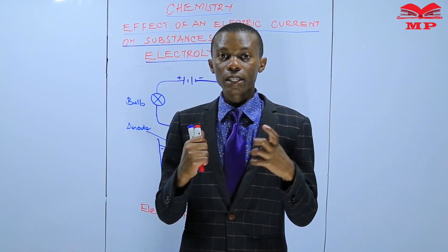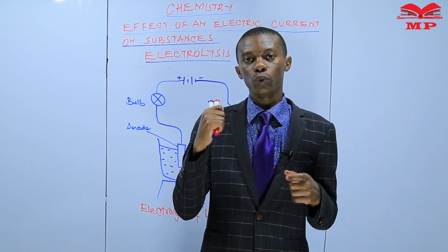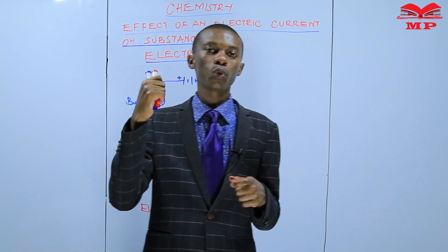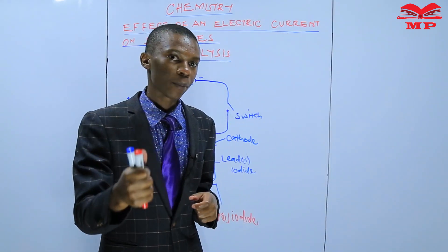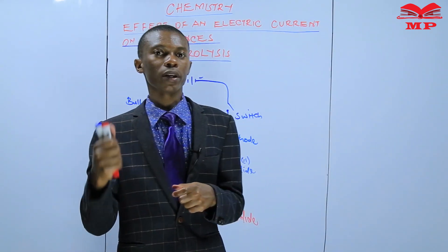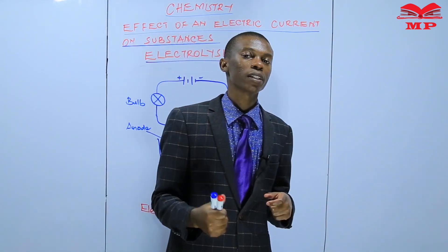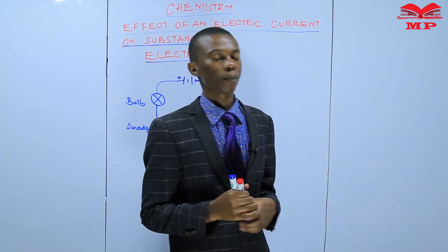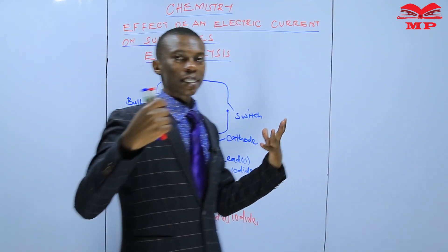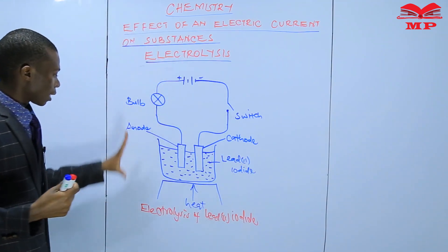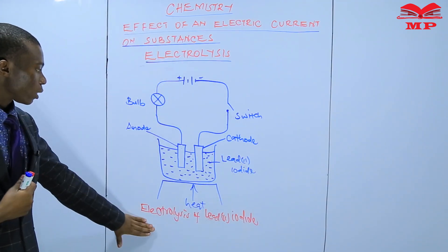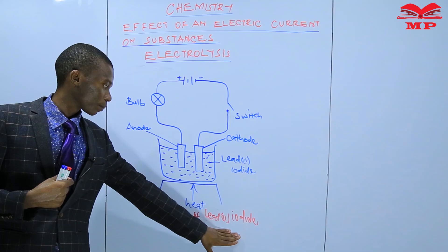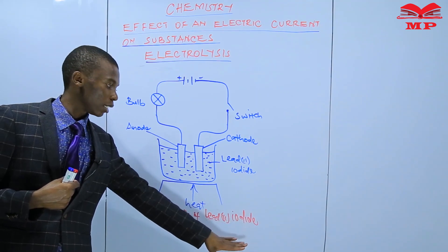In this lesson, I want us to do more examples — writing more equations on what happens at both the anode and the cathode. In this lesson, we are discussing the electrolysis of lead(II) iodide.